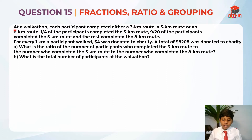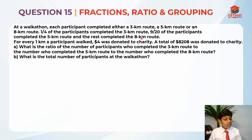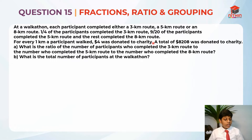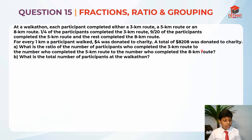Let's read the question first. At a walkathon, each participant completed either a 3km route, a 5km route, or an 8km route. One quarter of the participants completed the 3km route, 9 over 20 of the participants completed the 5km route, and the rest completed the 8km route. For every 1km a participant walked, $4 was donated to charity. A total of $8,208 was donated to charity. Part A: What is the ratio of the number of participants who completed the 3km route, to the number who completed the 5km route, to the number who completed the 8km route?